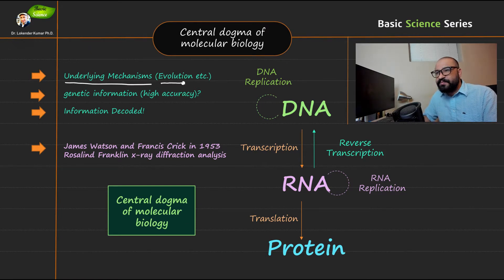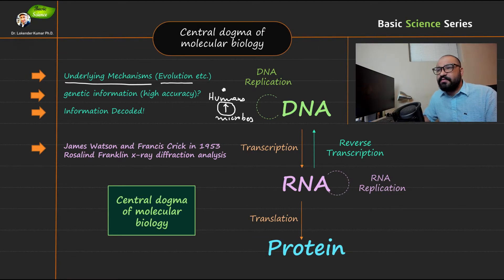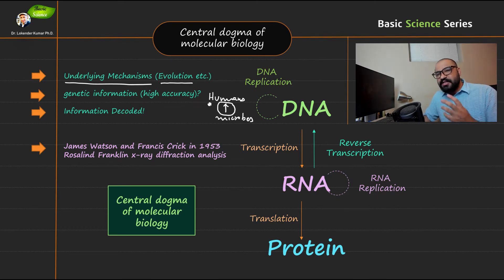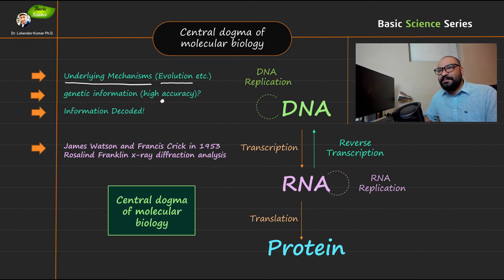When we discuss evolution — how a particular individual, let's say humans, evolved from microbes — there must be many different kinds of biological processes involved. What are those molecular mechanisms involved in the evolution of a cell? Initially this was not known, but slowly scientists dug into cellular molecules and found important mechanisms involved in the exchange of information.